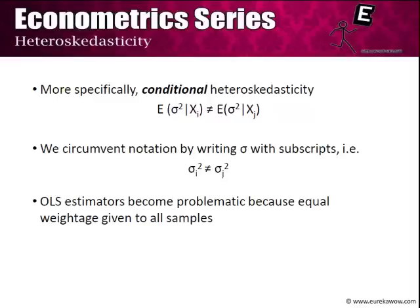The problem that we will find shortly is that OLS estimators become problematic because they give equal weightage to all samples. A sample point such as A, which shows lower variance, is actually more reliable than another sample point which shows higher variance, and hence it should be given more weightage. We will return to this point when we consider the remedies of heteroscedasticity.